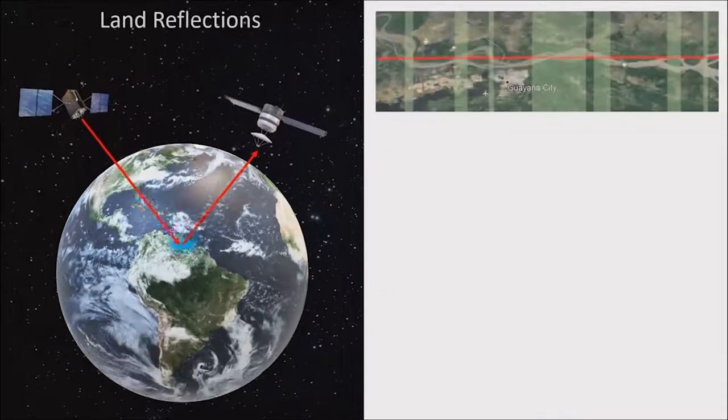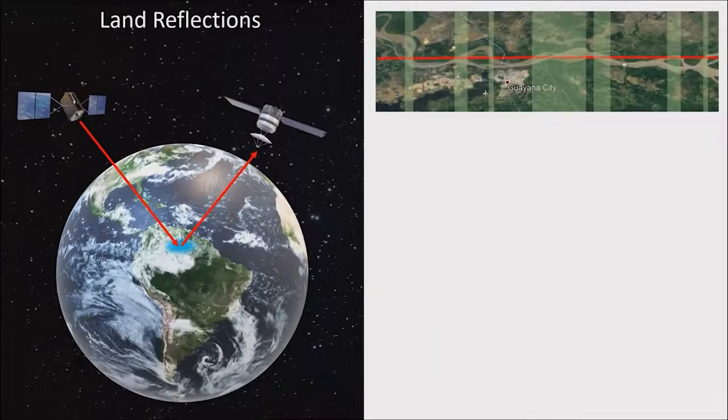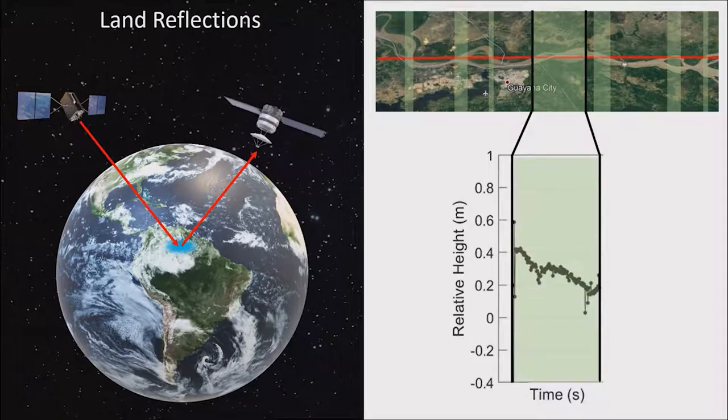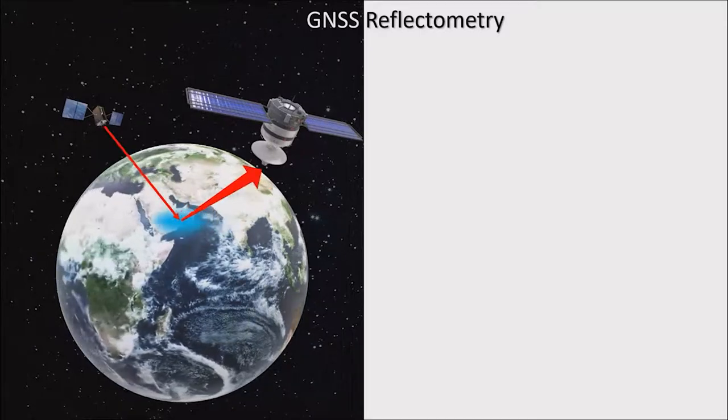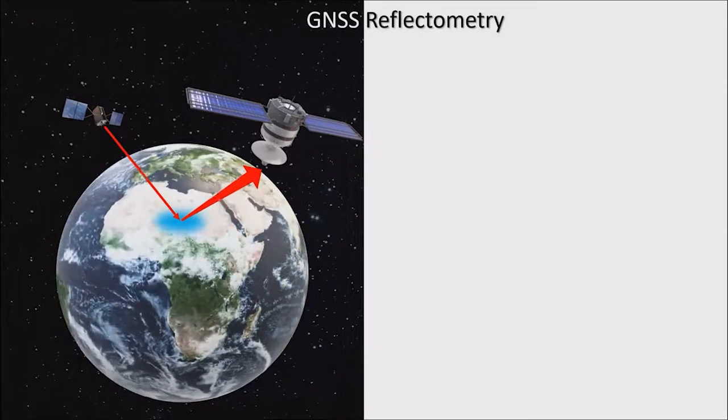GNSS signal reflections from land are useful too. For example, we've used coherent reflections from rivers to see changes in height. We're continuing to explore more applications in the exciting and rapidly developing field of GNSS reflectometry.